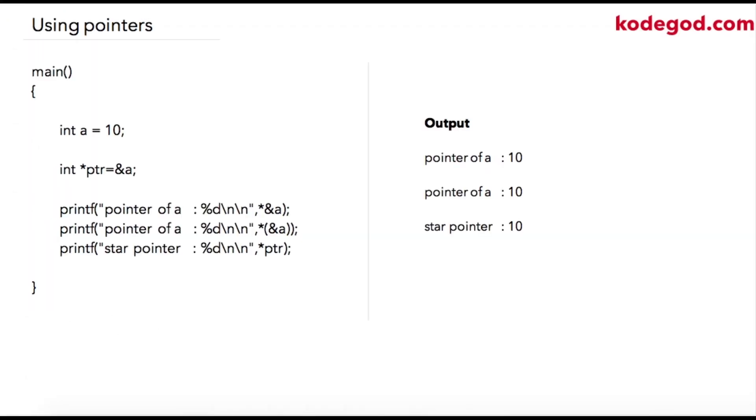In this lecture we'll check how pointers can be used. I'm taking one example where I'm declaring an integer variable a equal to 10. After that I'm declaring my pointer. What the pointer is doing here is I'm using the indirection operator star and initializing an integer pointer named as ptr, and I'm initializing it to the address of location a, which is the variable that I have declared over here.